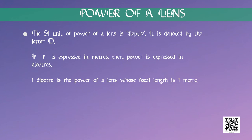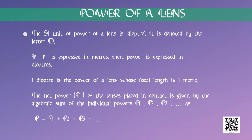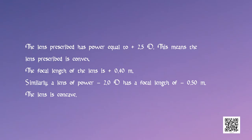One diopter is the power of a lens whose focal length is 1 meter. The power of a lens carries the same sign as its focal length. Therefore, the power of a convex lens is positive and that of a concave lens is negative. Opticians prescribe corrective lenses indicating their powers. For example, a lens prescribed with power plus 2.5 diopters means the lens is convex, with focal length equal to 0.40 meters. Similarly, a lens of power minus 2 diopters has a focal length of minus 0.5 meters — this would be a concave lens.